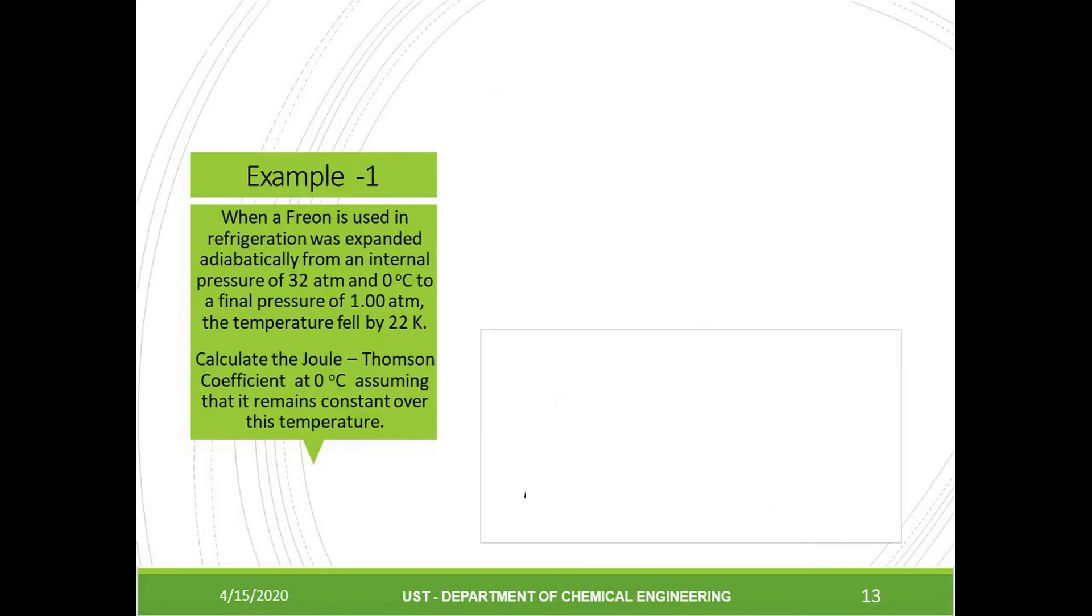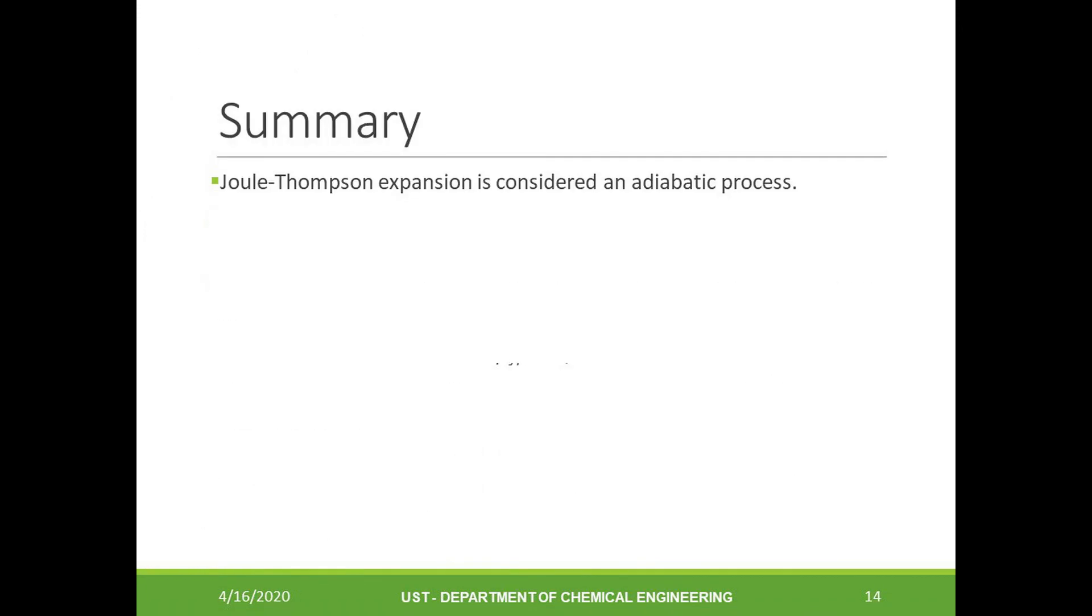Before going any further, let's try to answer a typical problem. Freon used in refrigeration was expanded adiabatically from an initial pressure of 32 atmospheres and zero degrees Celsius to a final pressure of one atmosphere, and the temperature fell by 22 kelvin. Calculate the Joule-Thompson coefficient at zero degrees Celsius, assuming that it remains constant over this temperature. To answer this, we should recognize that the Joule-Thompson coefficient is the ratio of the temperature change to pressure change under isoenthalphic conditions. This equation is shown here. Notice in the problem it says that the temperature fell by a certain value, so we will write a negative sign to denote the temperature drop in the numerator. Substituting the values gives us a Joule-Thompson coefficient of 0.71 kelvin per atmosphere.